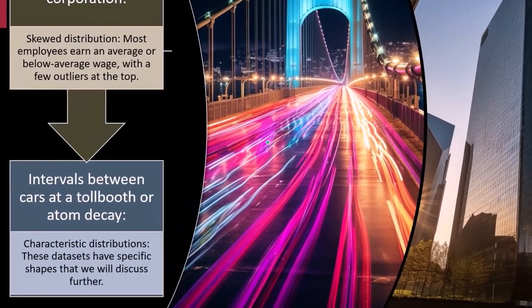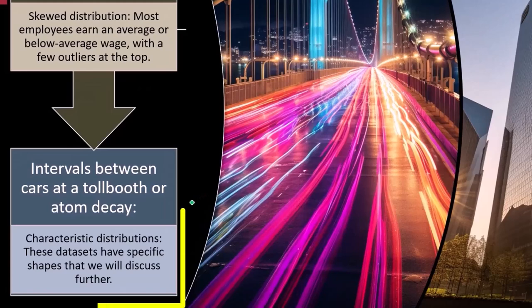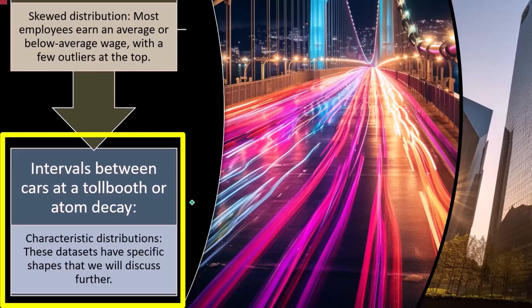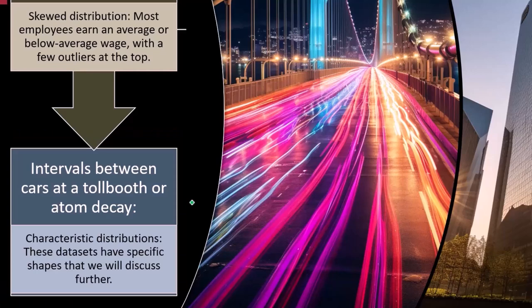So intervals between cars at a toll booth or atom decay. These are going to be some examples of different types of distributions we haven't spent as much time on in prior presentations. We'll spend more time on them in current presentations.